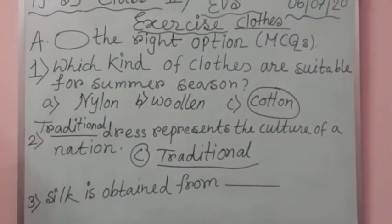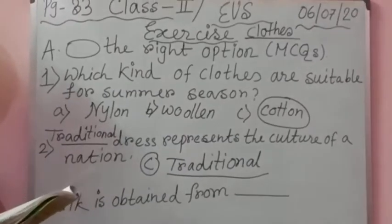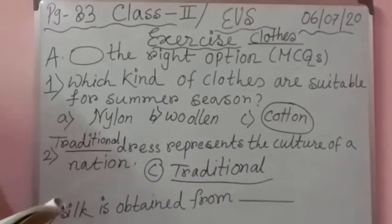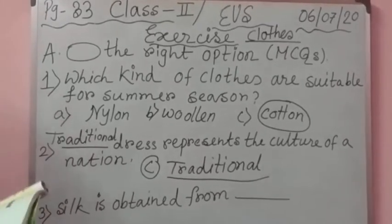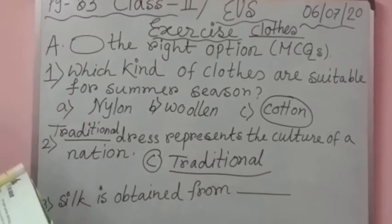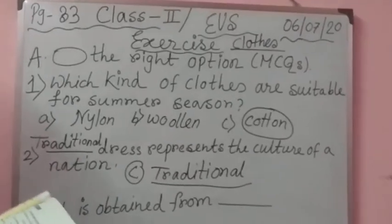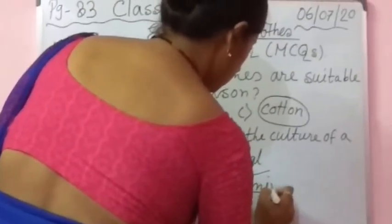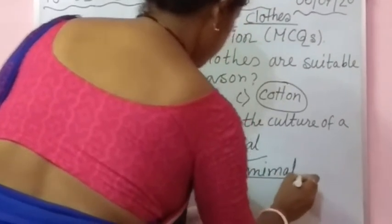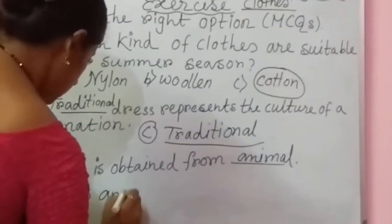Number C, Traditional. Number 3: Silk is obtained from dash. Options: Plant, Animal, or Chemical? I hope all of you know the answer. Silk is obtained from Animal. Option B — Animal.